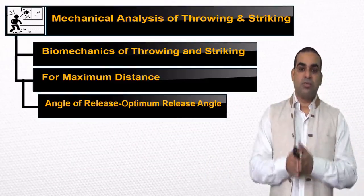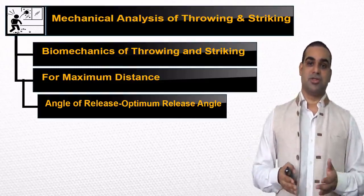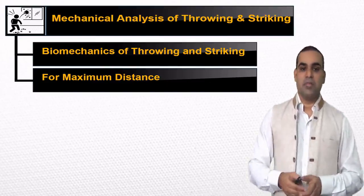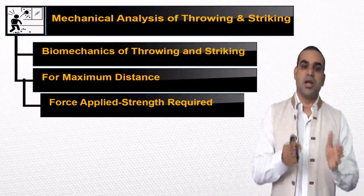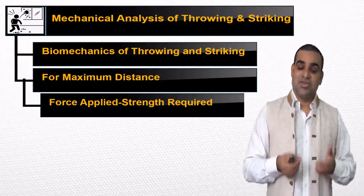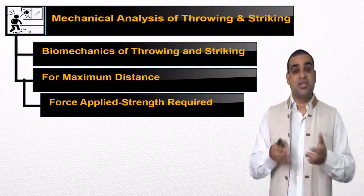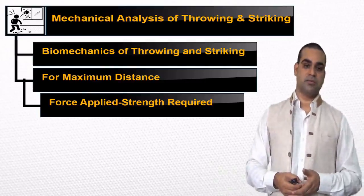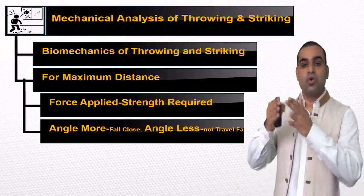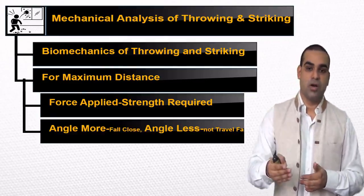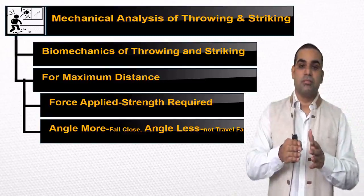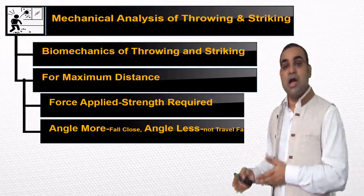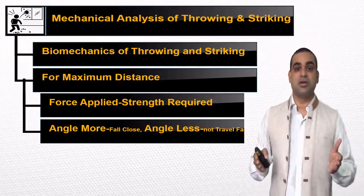Next is angle of release. Optimum release angle produces greater distance. If we apply the force in the optimal proportion in the vertical and horizontal direction, for that we require strength — which depends on genetic level but can be improved through training and workout. If the angle is more, the object will fall close. And if the angle is less, it will not travel so far. Only the optimal distribution between the vertical and horizontal component matters. It differs from athlete to athlete — some may be tall, some may have good strength.